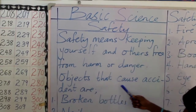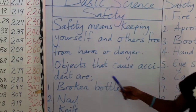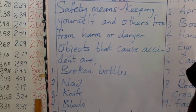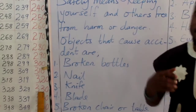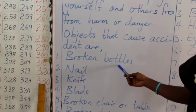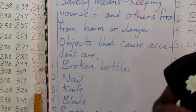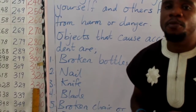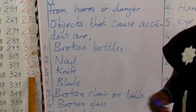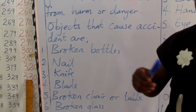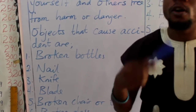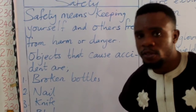Objects that cause accidents include broken bottles. In your home, you might be taking your soft drink, or something made of bottle, and it slips off your hands, drops on the floor, and breaks. When that happens, you call your parents or someone older than you to take care of that trash.